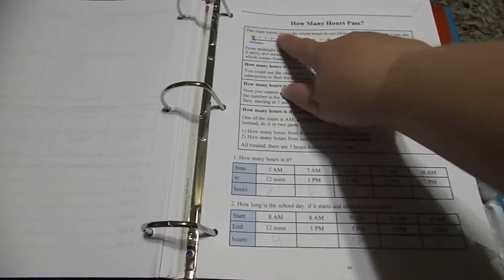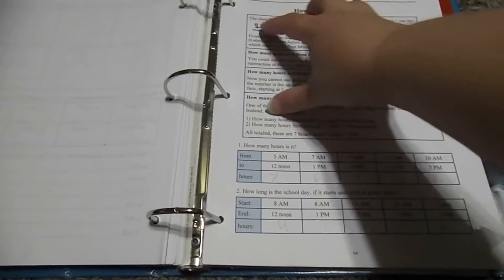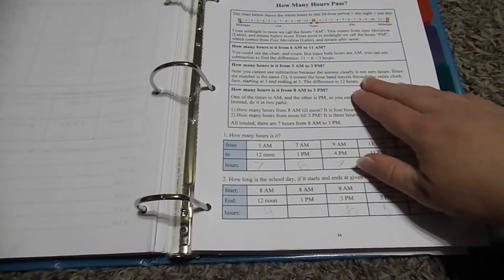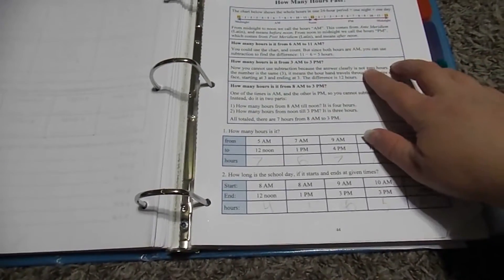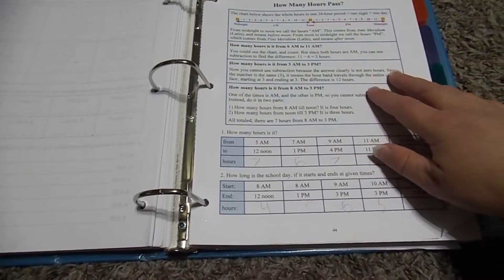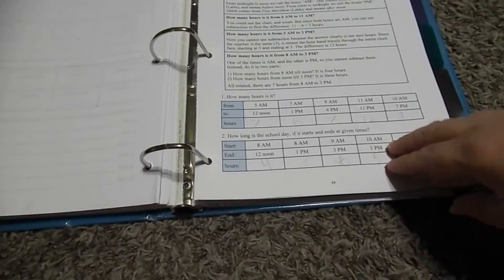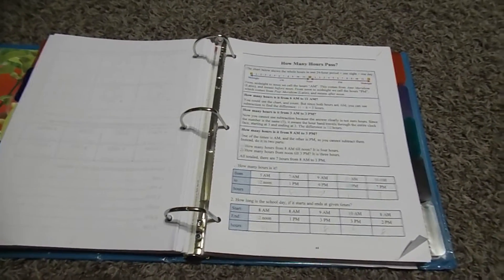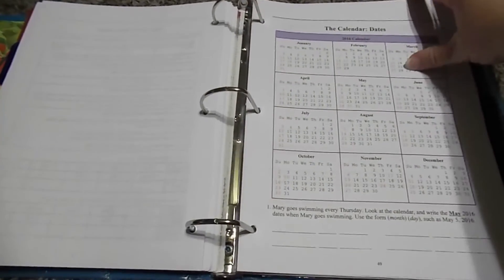And then it gets into the lessons. So I'm going to show you kind of what a lesson looks like. So for instance, this one is how many hours passed. And so the lesson, the teaching part, is right above it. And even sometimes in the teaching piece of it, there will be a question to answer just as a sample, and then you get right into the work. So it's a pretty short little lesson, and then you get into the practice part of it.